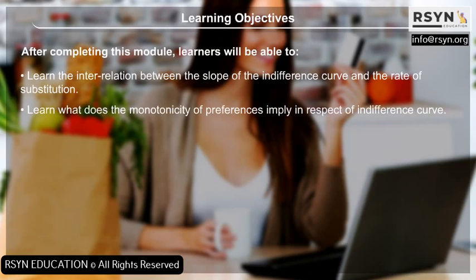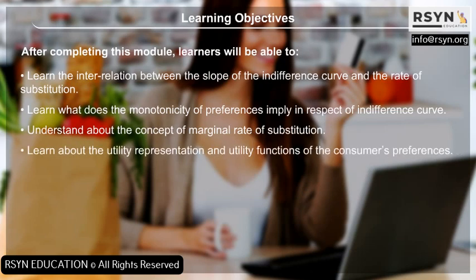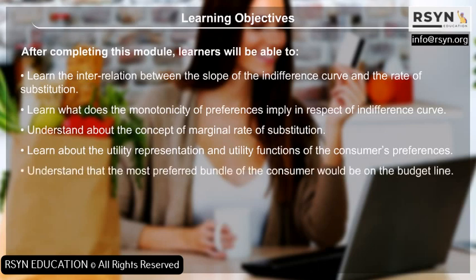Learners will understand what the monotonicity of preferences implies in respect of the indifference curve, and understand the concept of marginal rate of substitution. They will also learn about utility representation and utility functions of the consumer's preferences, and understand that the most preferred bundle of the consumer would be on the budget line.